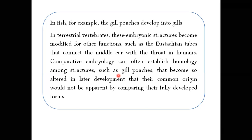If we look at fully developed gills and the Eustachian tube, we wouldn't think they share a common origin. Their common origin only becomes apparent when we study their comparative embryology. Comparative embryology can often establish homology among structures such as gill pouches that become so altered in later development that their common origin would not be apparent by comparing their fully developed forms.